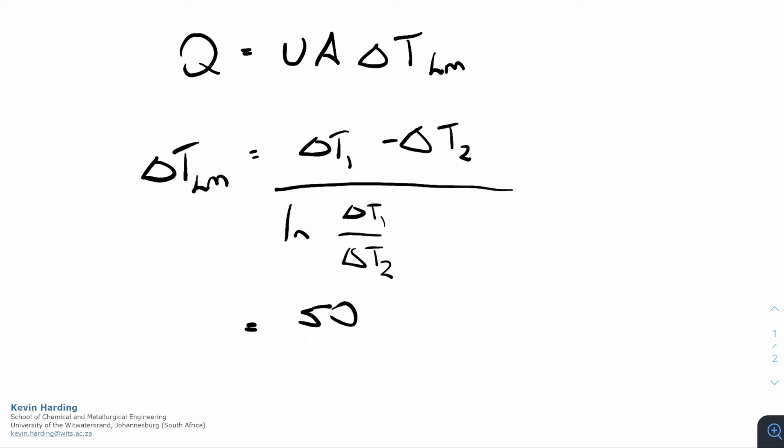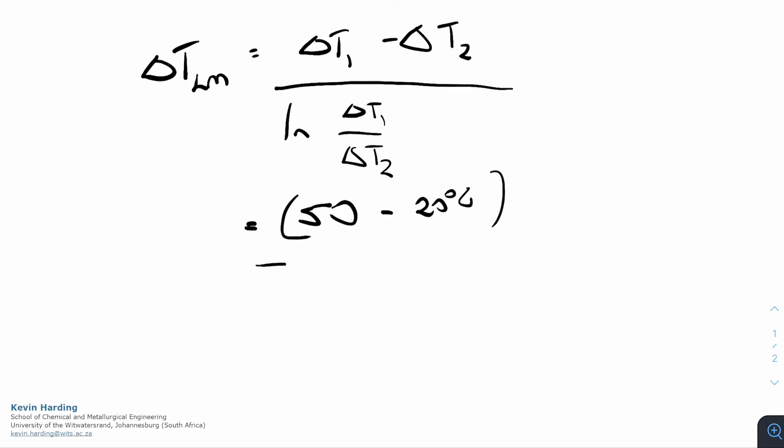Delta T1 we said was 50 minus delta T2 which was 20 degrees Celsius, divided by the natural log of 50 over 20. Please just double check my maths. That should come out as 32.74, and it's a delta so we can just leave it as Kelvin.